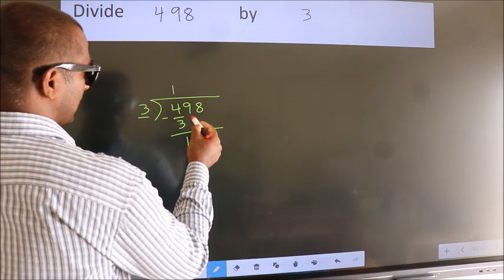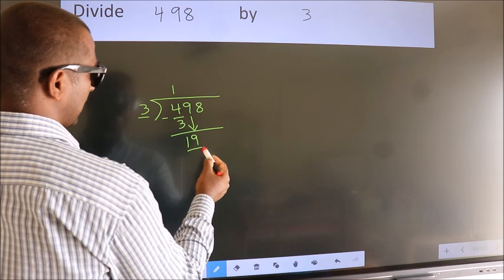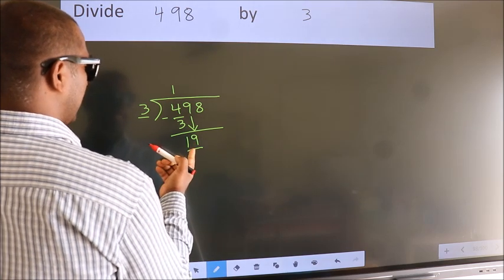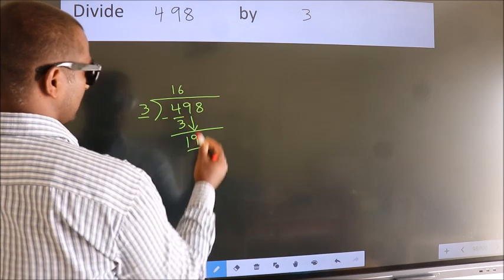After this, bring down the beside number. So, 9 down. So, 19. A number close to 19 in 3 table is 3, 6, 18.